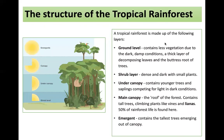Now you need to know two types of biome in detail: the tropical rainforest and the polar regions of Antarctica and the Arctic. The tropical rainforest is made up of four or five layers. The ground layer contains less vegetation due to the dark, damp conditions — it has a thick layer of decomposing leaves and the buttress roots of trees. The shrub layer is dense and dark with small plants. The under canopy contains younger trees and saplings competing for light. The main canopy is the roof of the forest, containing tall trees and climbing plants like vines and lianas — 50% of rainforest life is found in the canopy. Just above it, we have emergent trees: the tallest trees emerging out of the canopy.